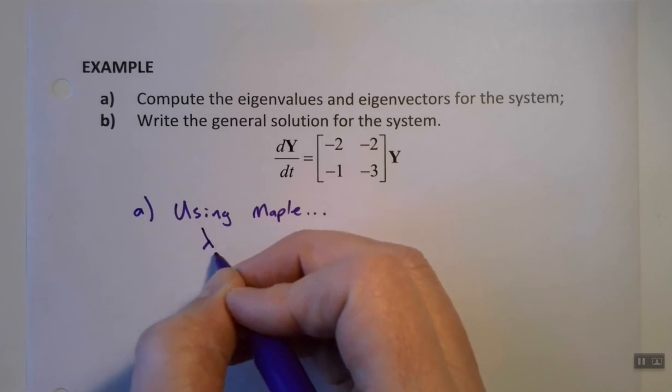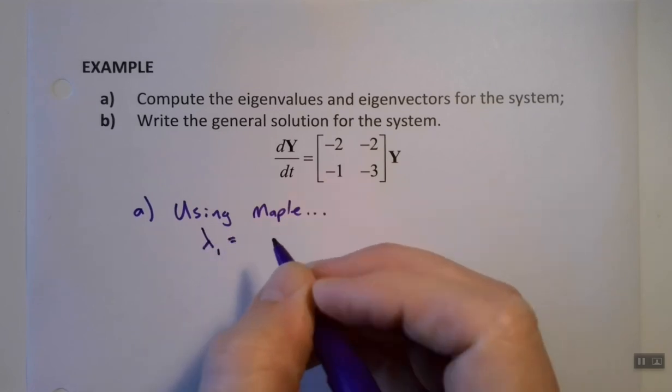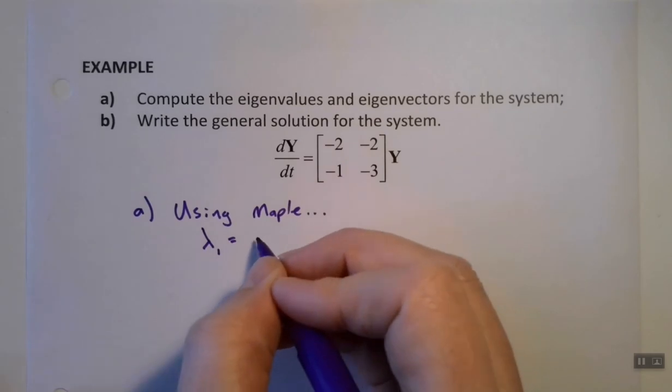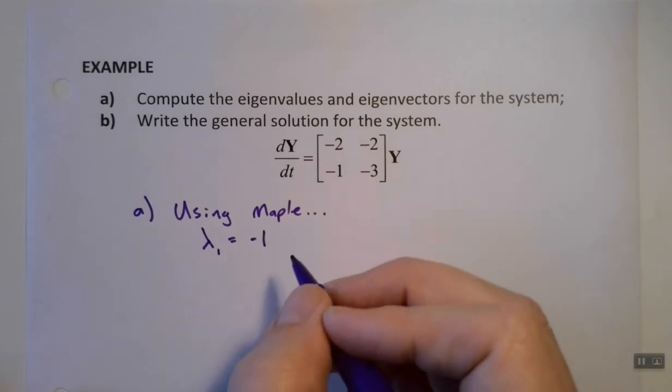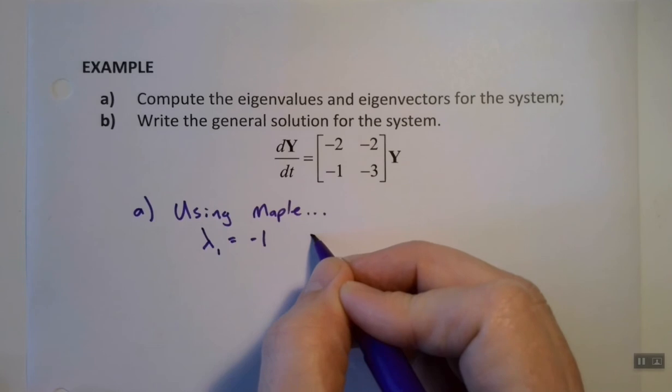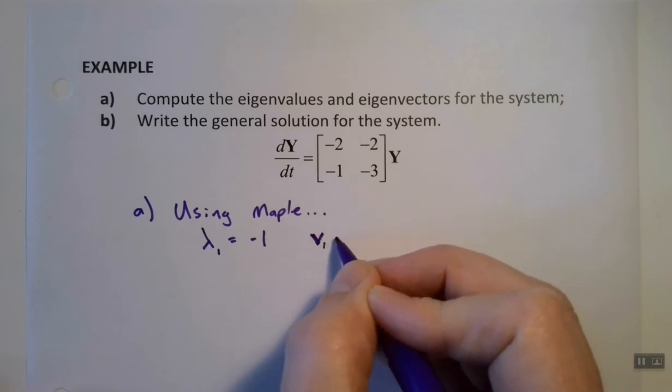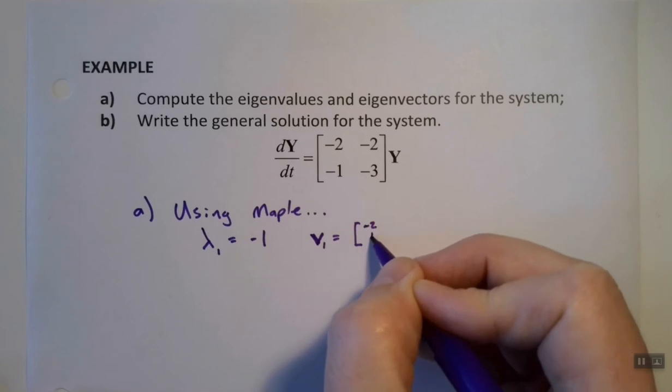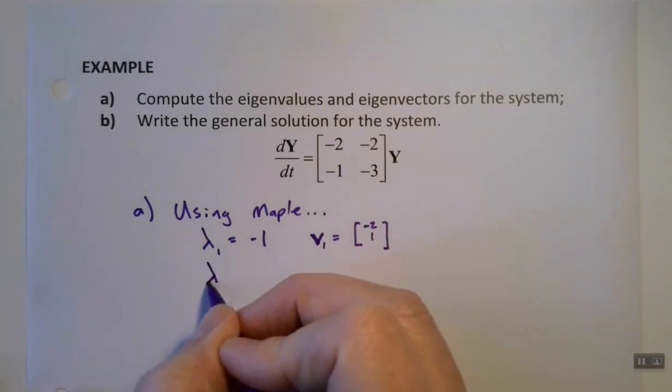That'll be in the Maple notes sheet for this section. So just a real brief rundown: we find out that lambda 1 equals negative 1, and its associated eigenvector, which we'll call V1, is going to be the vector negative 2, 1.